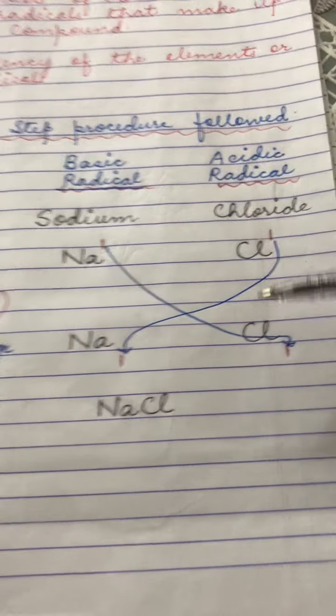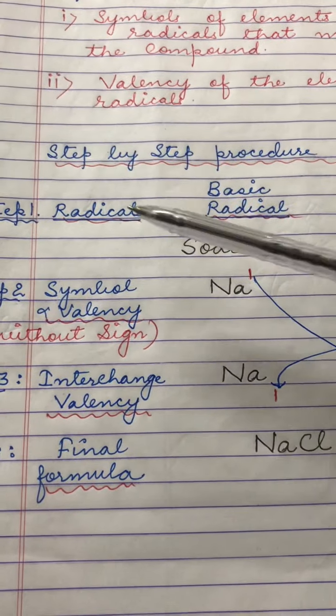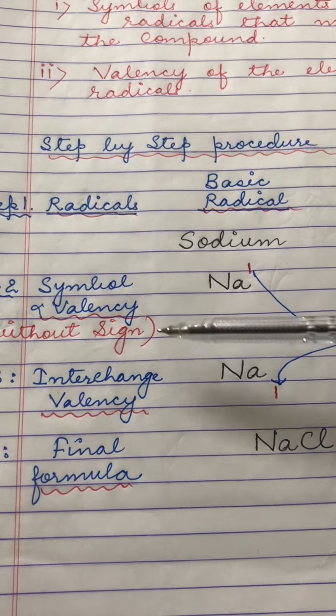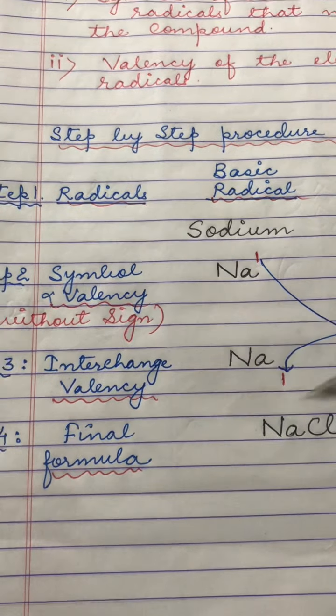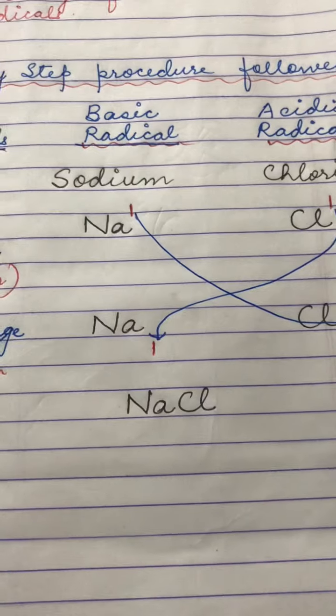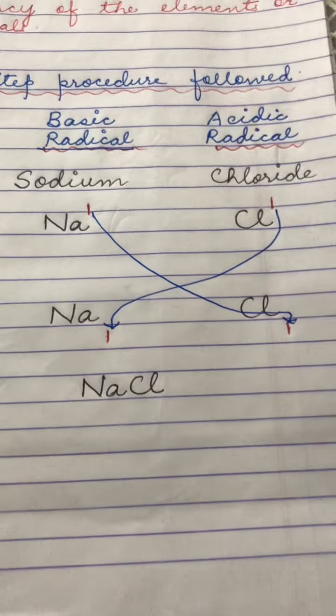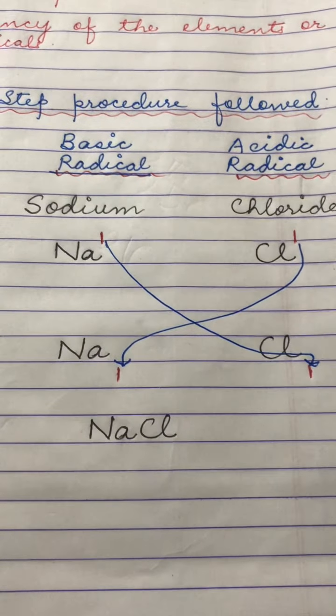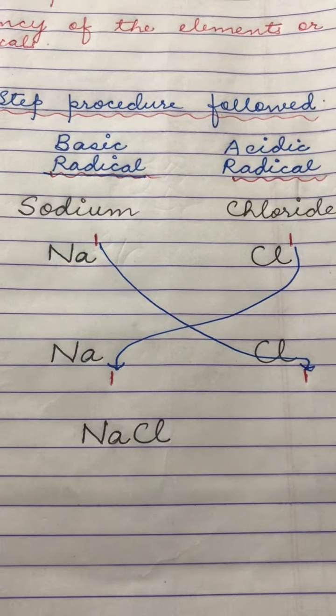By three simple steps: writing the radicals, then writing the symbol and valency of the radical, interchanging the valency and finding the final formula. In the preceding videos I will explain you in detail taking specific examples for formula making. Thank you.